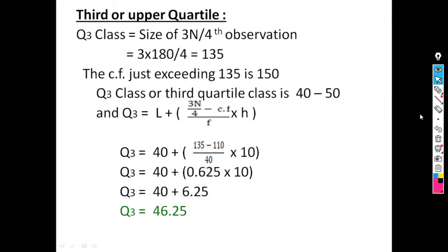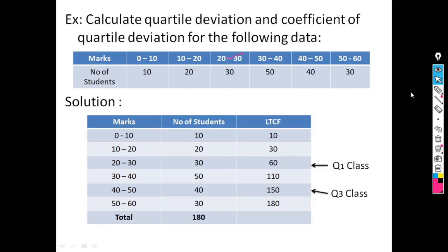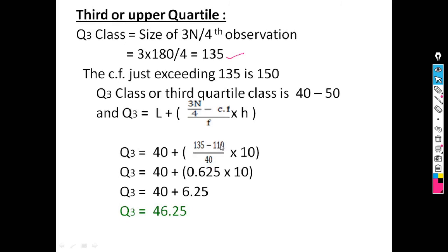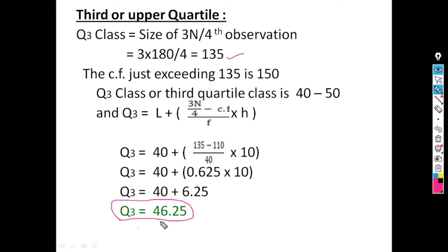Substituting: L equals 40, 3N by 4 equals 135, CF equals 110, F equals 40, and H equals 50 minus 40 equals 10. After calculation, Q3 equals 46.25. We verify: 46.25 lies within the class interval 40 to 50, so the answer is correct.